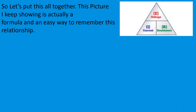So let's pull this all together. This picture is actually a formula and an easy way to remember this relationship. Imagine voltage is on top of a division line and underneath it are I for current and R for resistance, with implied multiplication between I and R. If you multiply I times R you get the voltage. If you divide I up into E you get the resistance. If you divide R up into E you get the current. No matter what, if you know two of the three you can always find the third.